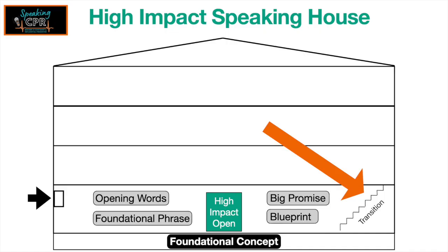With that in mind, how do we transition from one point to another, or from your opening into your first point? Picture this: a set of rickety, worn-out stairs. Each time you step on them, they creak rather loudly. How comfortable would you be stepping on those stairs to go to the next floor of a house? Your stairs in a speech are like your transition. You want to go from one floor to the next, from one point to another. That's why we need smooth transitions — we want a sturdy staircase.